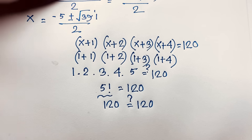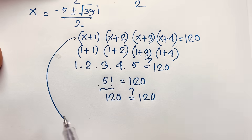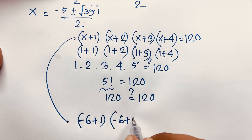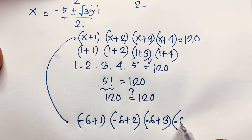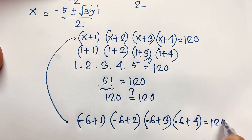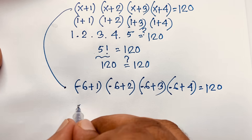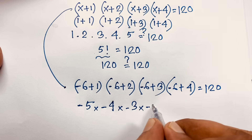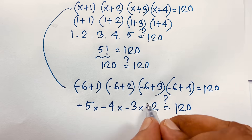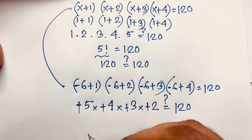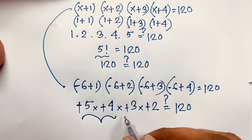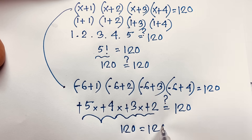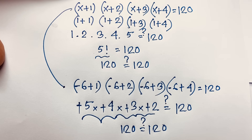Now checking x = -6: (-6+1)(-6+2)(-6+3)(-6+4) = (-5)(-4)(-3)(-2) = 120. The negatives cancel in pairs: (-5)(-4) = 20 and (-3)(-2) = 6, so 20 × 6 = 120. Left-hand side equals right-hand side, confirming x = -6 is also valid.